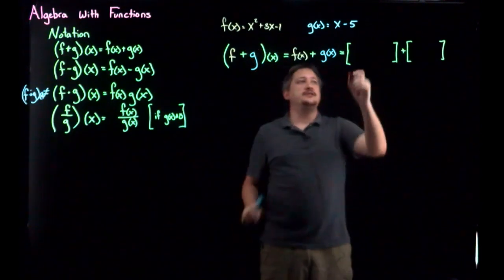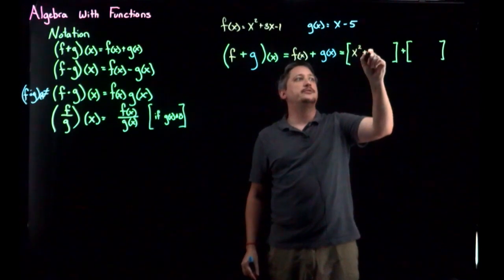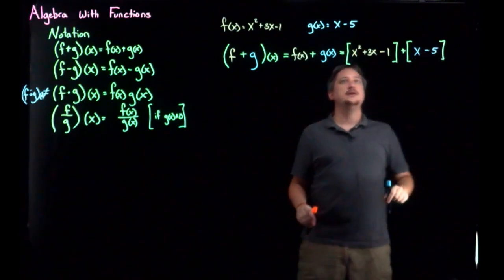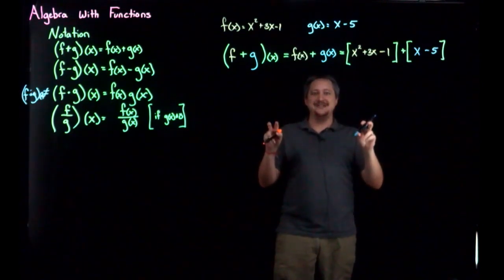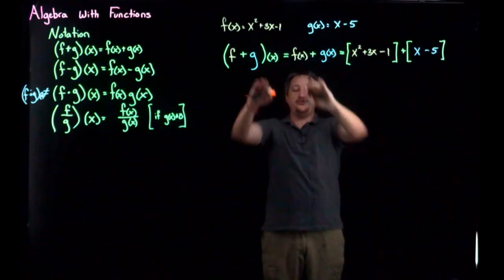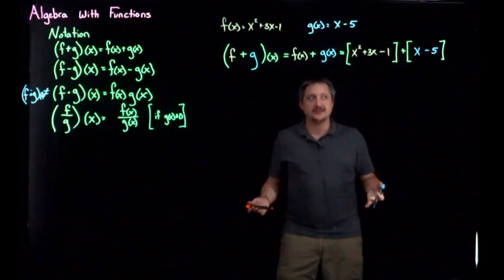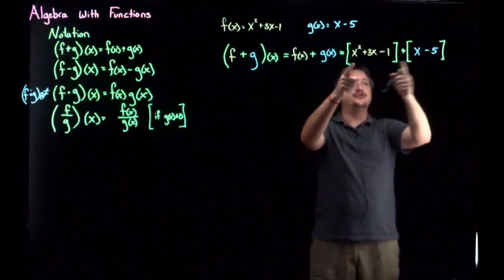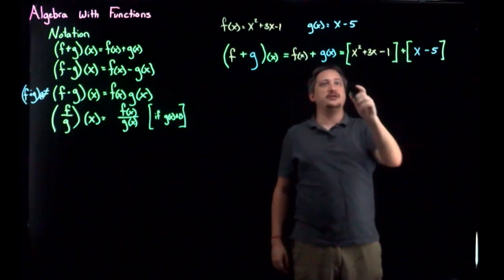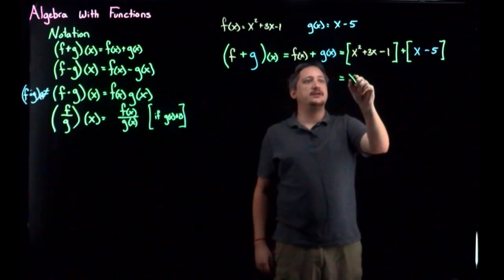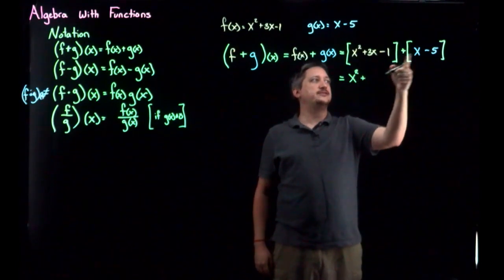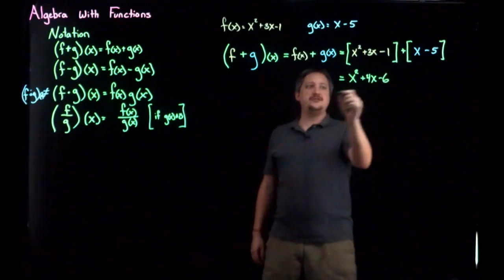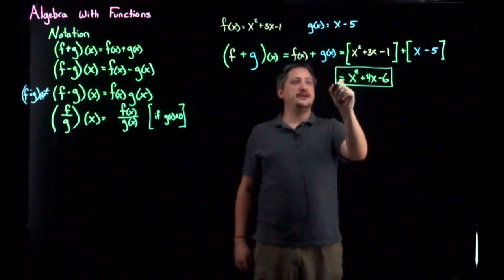F of X is X squared plus 3x minus 1, and G of X is X minus 5. Now I simplify: I don't need to distribute for addition, so I just combine like terms. I get X squared plus 3x plus X — that's 4x — minus 1 minus 5 gives minus 6. So the final simplified answer is X squared plus 4x minus 6.